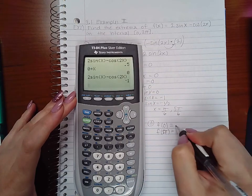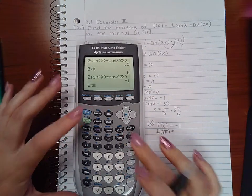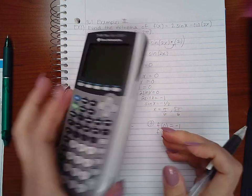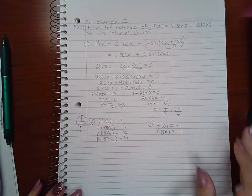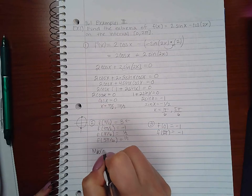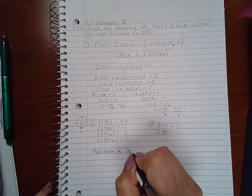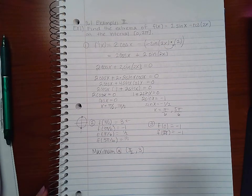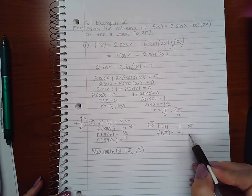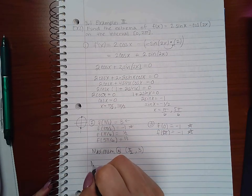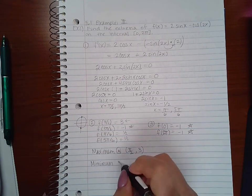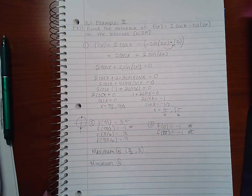So we take the highest y value for our maximum. So of all these y values the highest is 3 so we have a maximum at (π/2, 3).